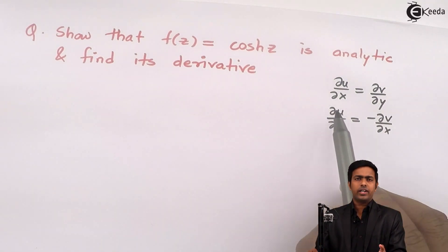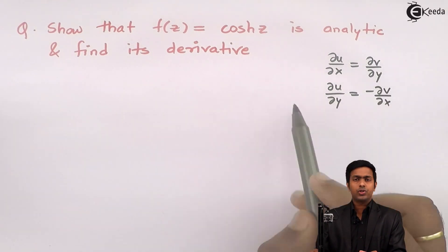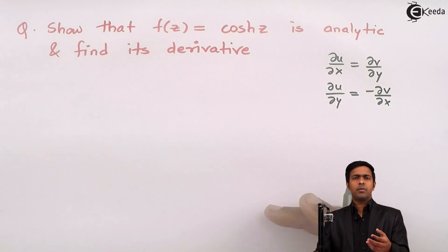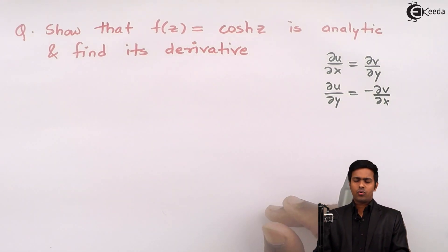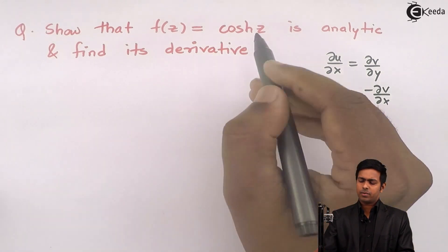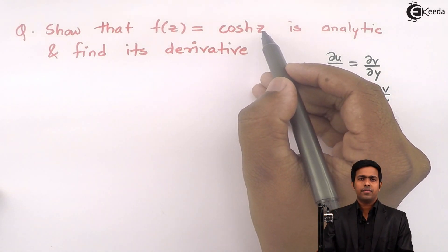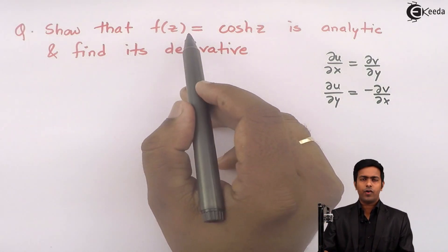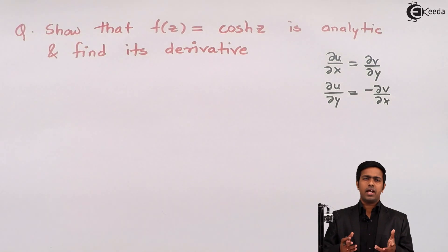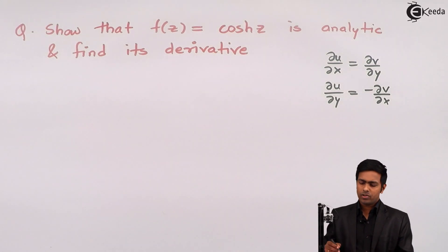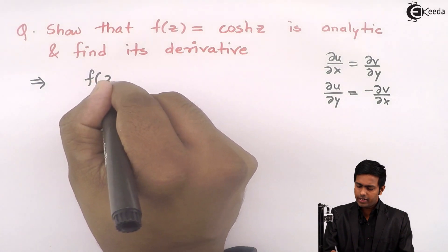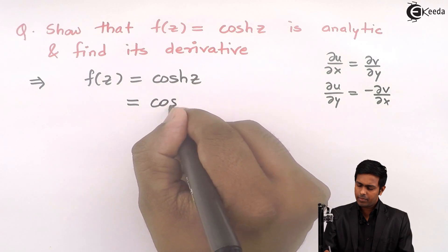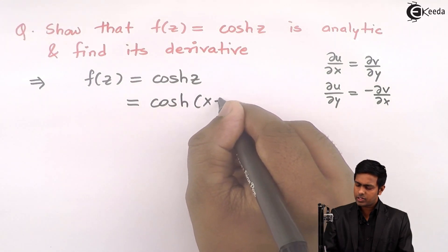To prove these two conditions we need the values of u and v, which are functions of x and y. To get them, we substitute z = x + iy and then find the real and imaginary parts of f(z). The real part will be called u and the imaginary part will be called v. So here f(z) = cosh(z) = cosh(x + iy).